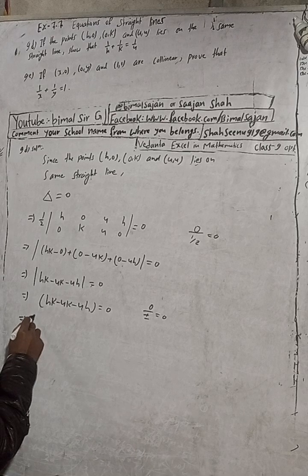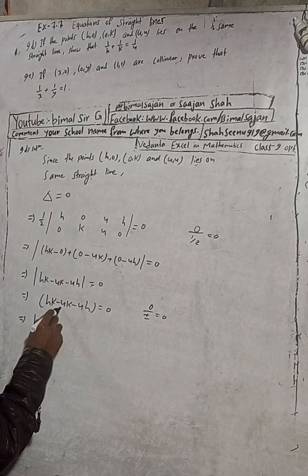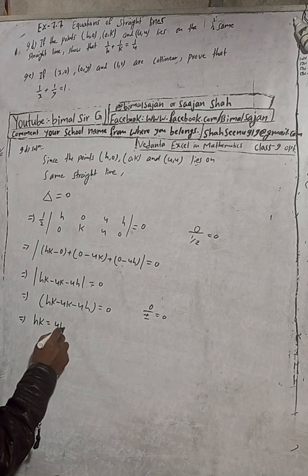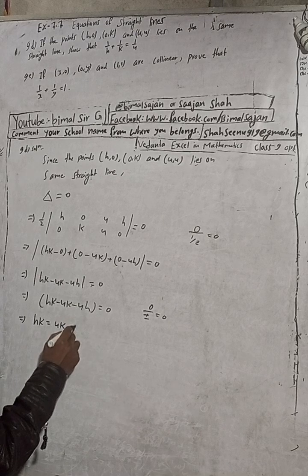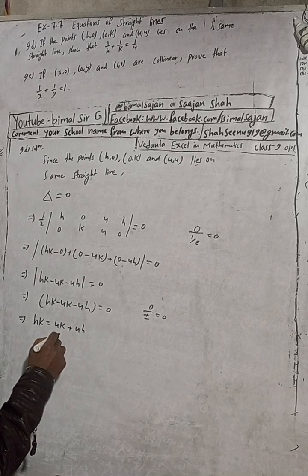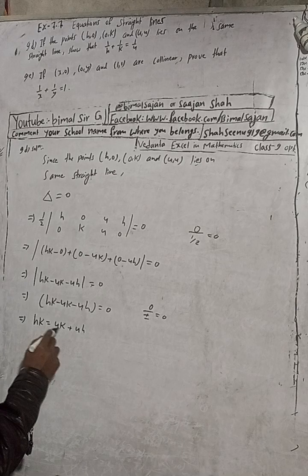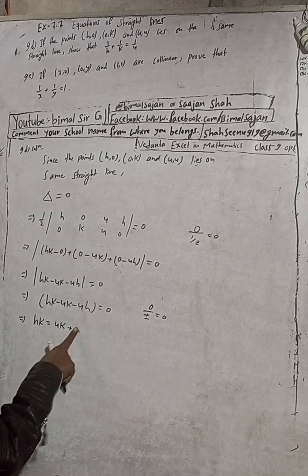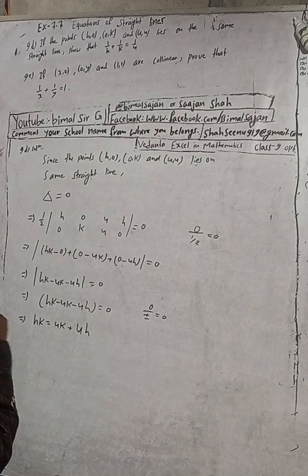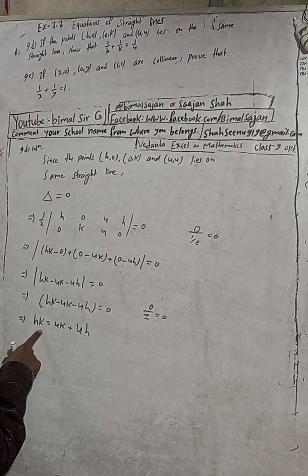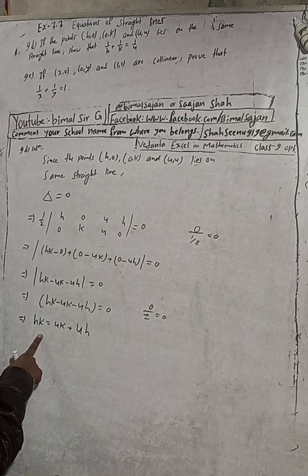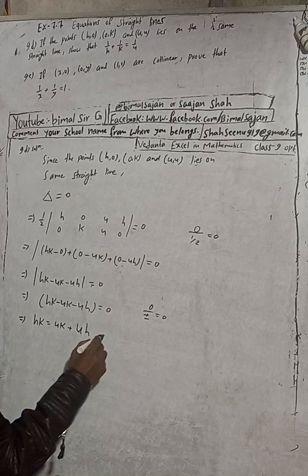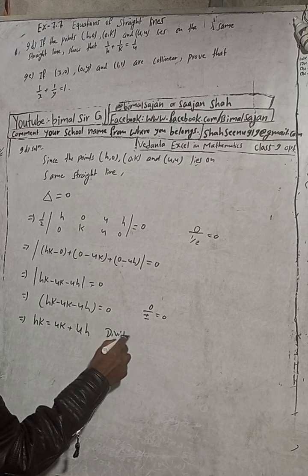Now rearranging: hk equals 4k plus 4h. Putting k on one side and 4k to the other side gives us hk equals 4k plus 4h.